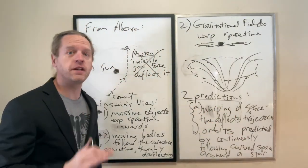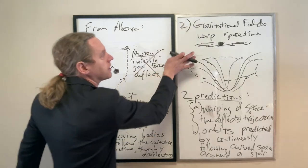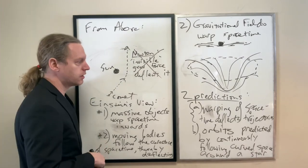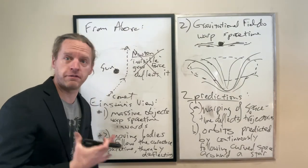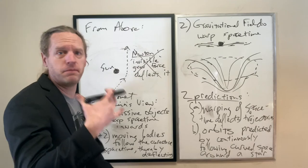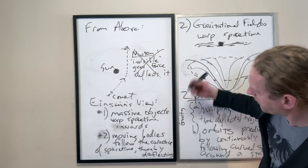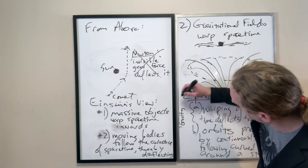So, specifically, Einstein's prediction was that light will also be deflected through curved space. And experimentally, we have learned that to be true, time after time after time. The way that this is usually summed up, which I don't love this, but gravity bends light.